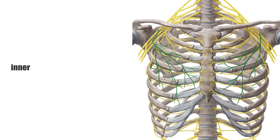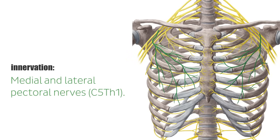The innervation is carried by the medial and lateral pectoral nerves, direct branches of the brachial plexus. The pectorals are located close in relation to the brachial plexus and both the subclavian artery and vein, which all run between the muscle and the ribcage.